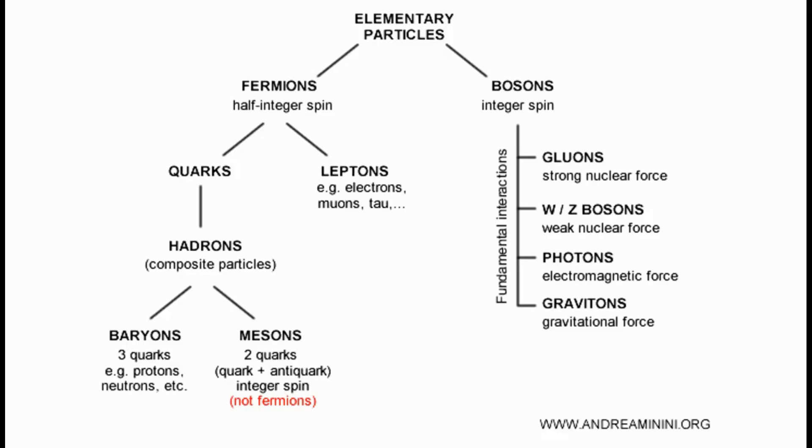On one side, you have the fermions. They have half-integer spin values, like one half. These are your electrons, protons, neutrons—the actual building blocks of matter, the stuff that makes up, well, us.